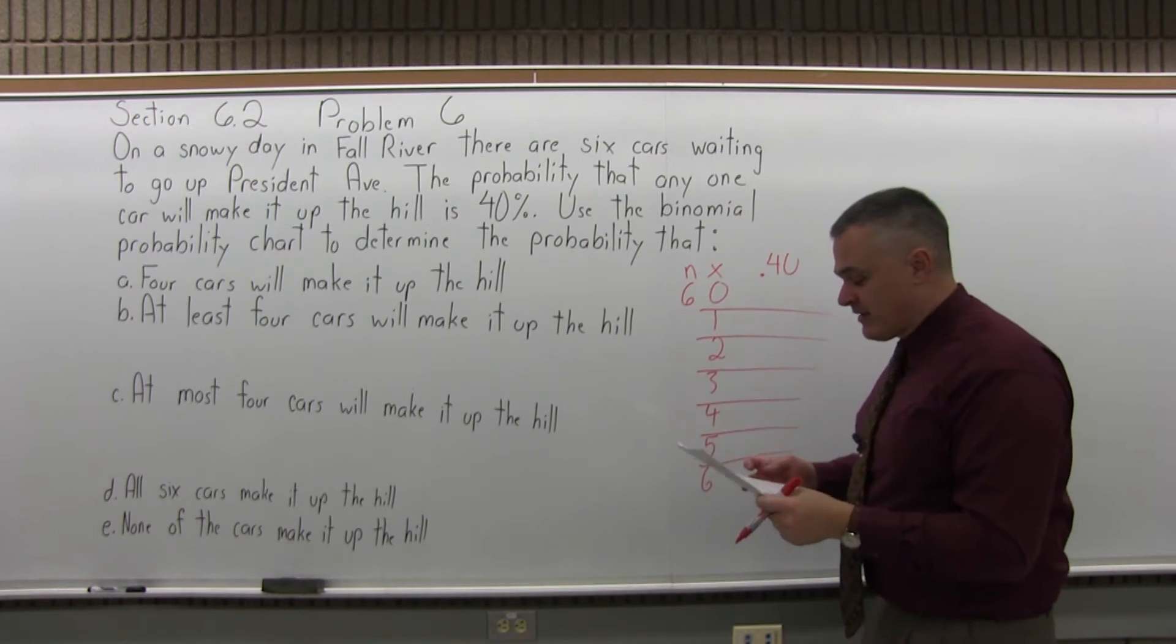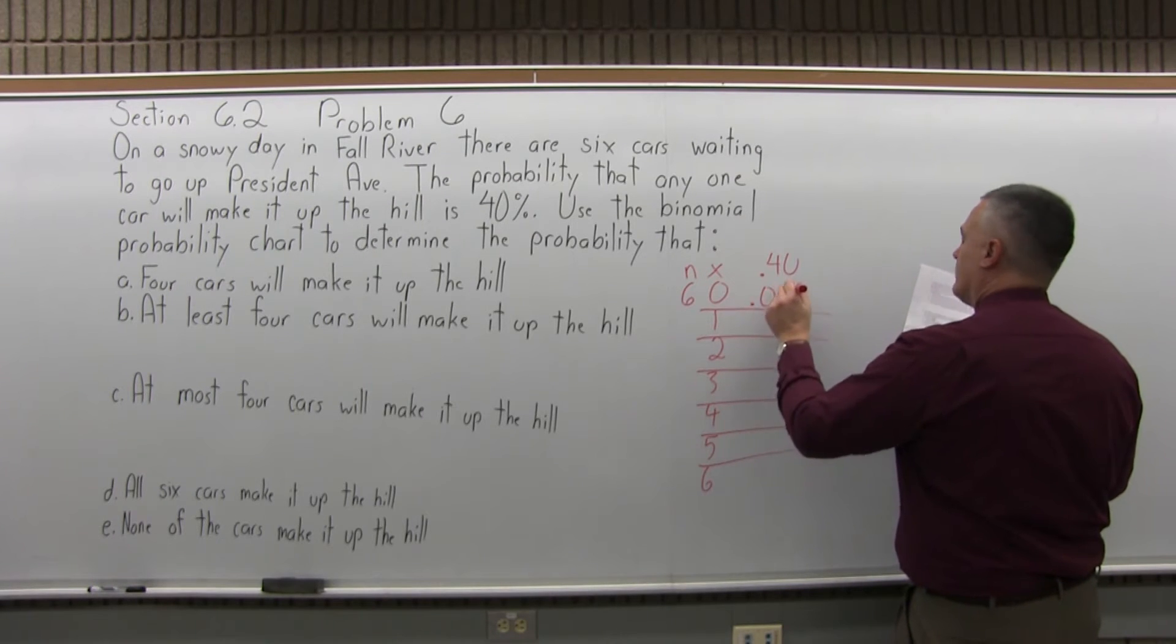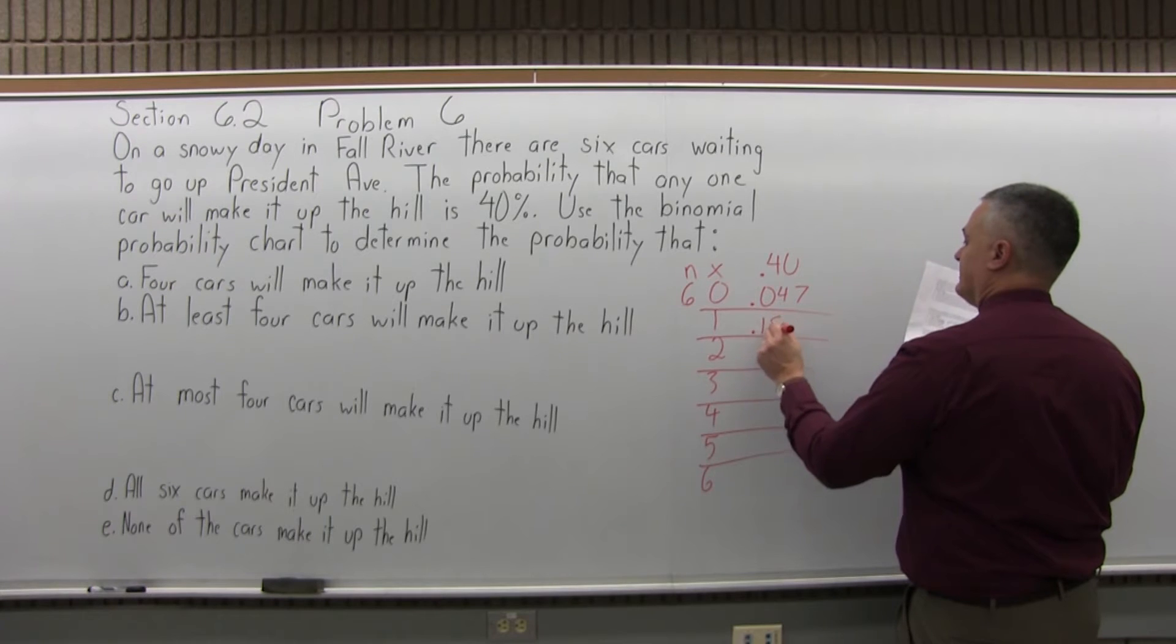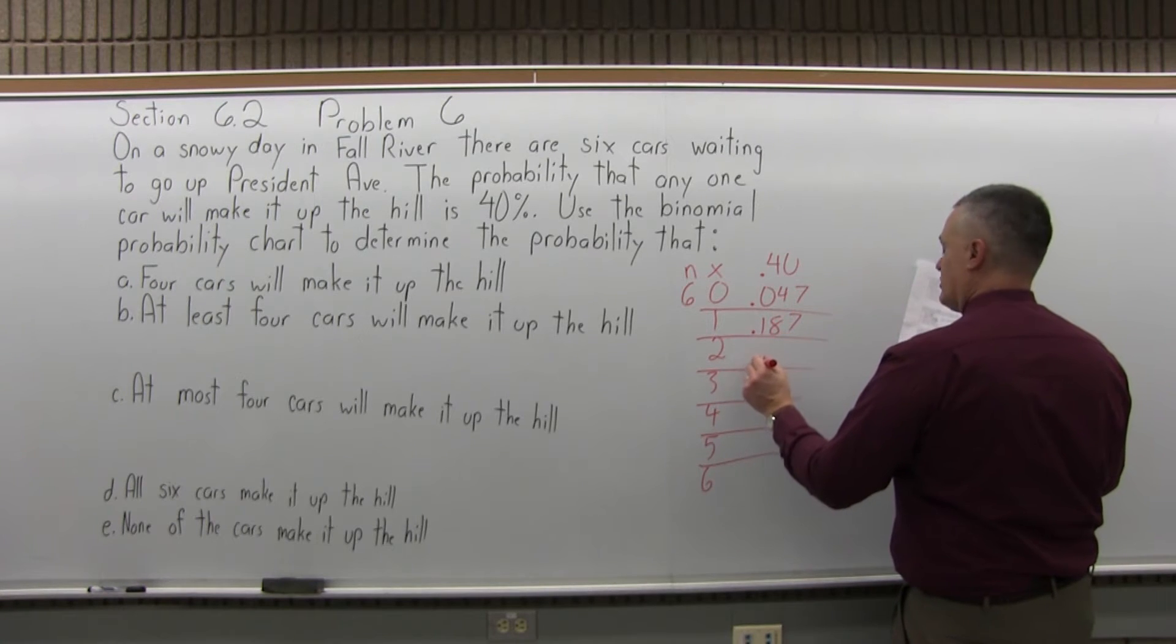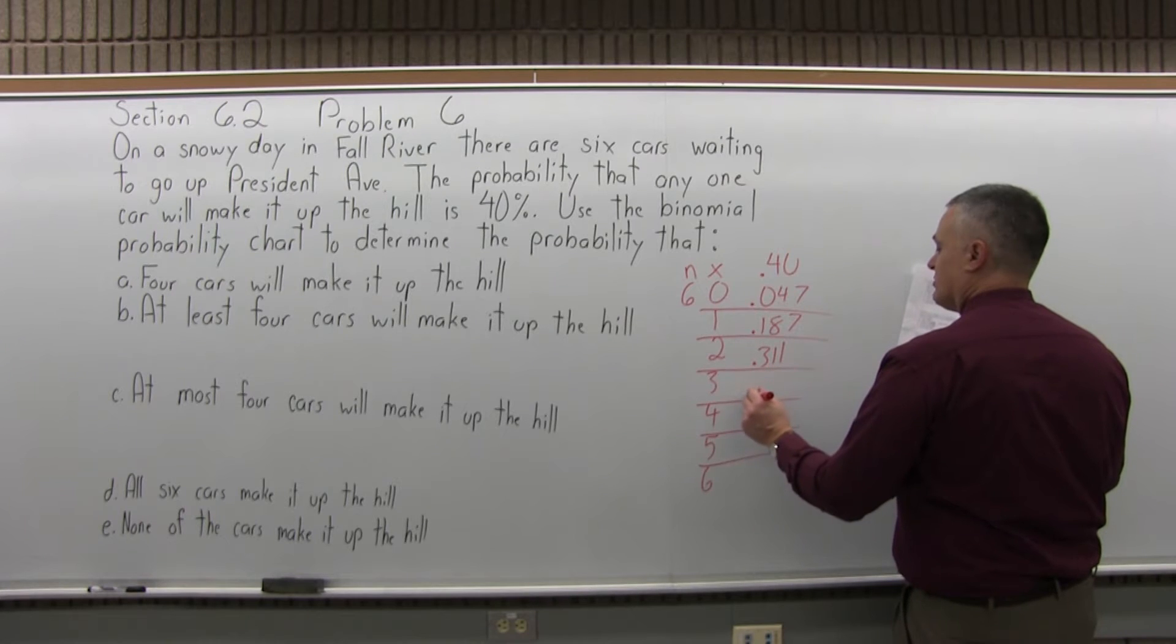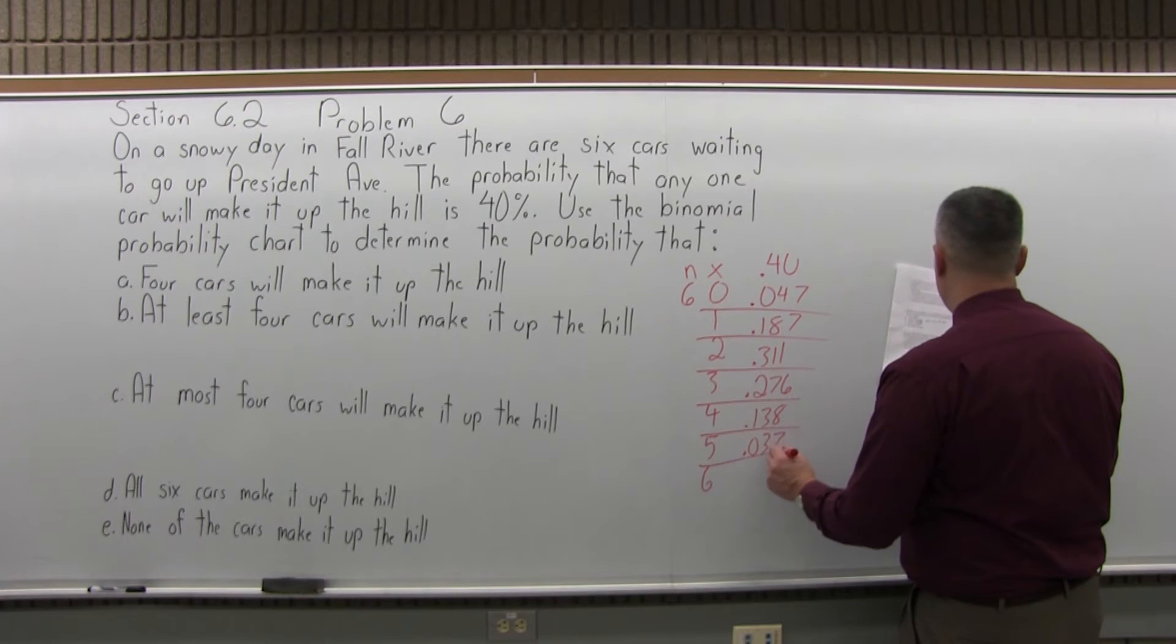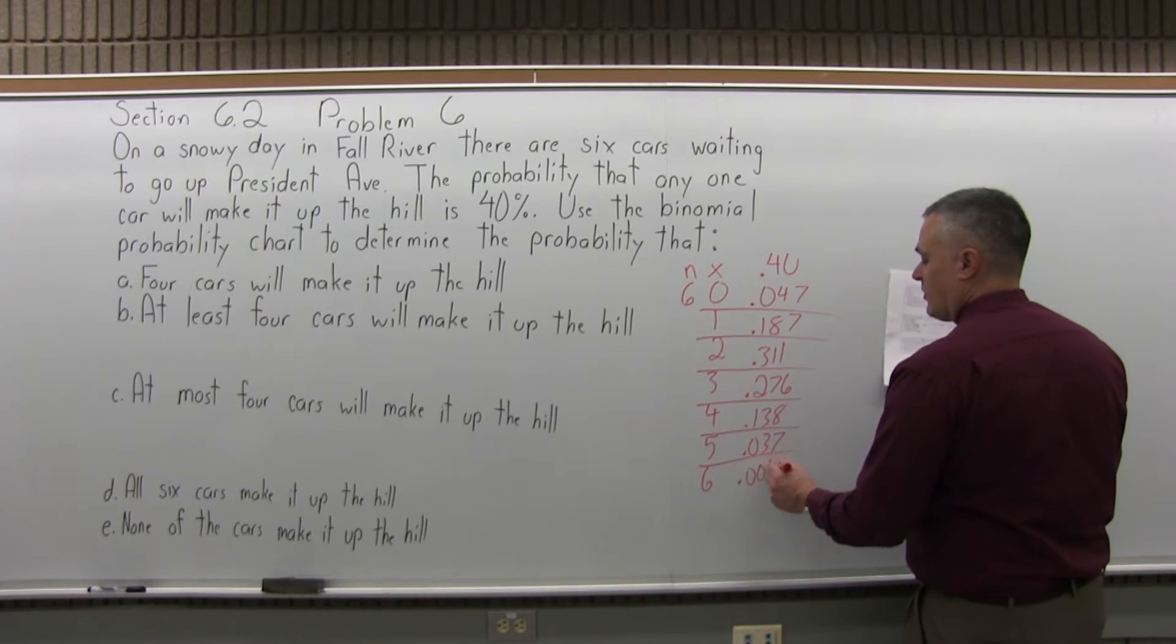If you look it up, I happen to have it written here. Next to zero, we'll have .047. Next to one is .187. Next to two is .311. Next to three is .276. Next to four is .138. Next to five is .037. And next to six is .004.